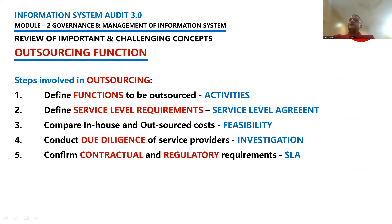The steps involved in outsourcing: first, it is essential to define the functions or activities which you are trying to outsource. Unless there is a clear definition of activities, it is very difficult to draft the service level agreement. Second, the service level agreement has to be defined — what type of services and key performance indicators should be included, based on which the level of service performed by a vendor will be measured. Third, compare in-house and outsource costs.